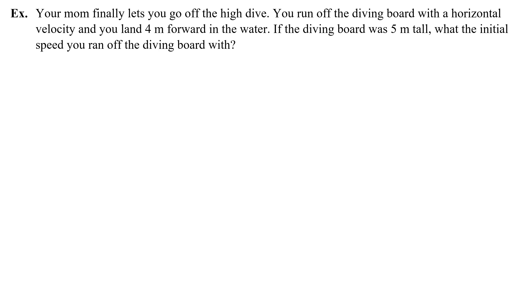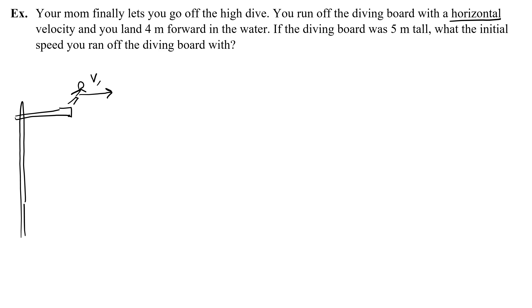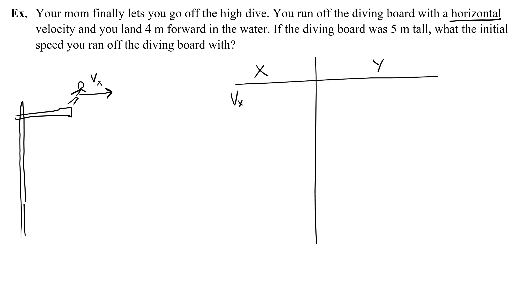Let's do another problem. Your mom finally lets you go off the high dive. You run off the diving board with a horizontal velocity and land 4 meters forward in the water. The diving board is 5 meters tall. What was the initial speed you ran off the diving board with? Here you are on the diving board — you run off with a horizontal velocity, which we'll call vx. That's what we're trying to find, so I'll put a question mark next to it.